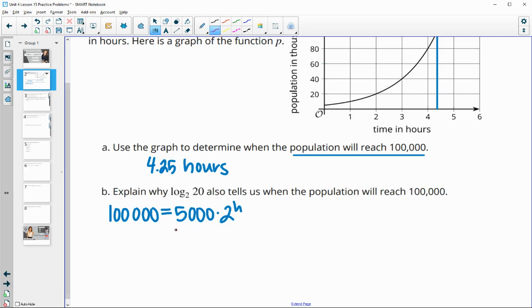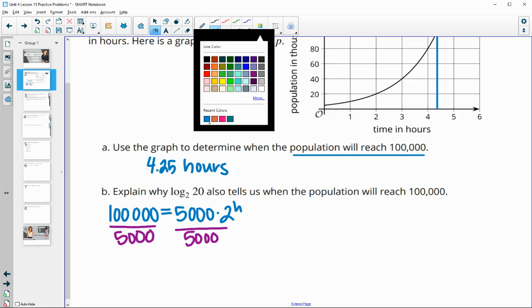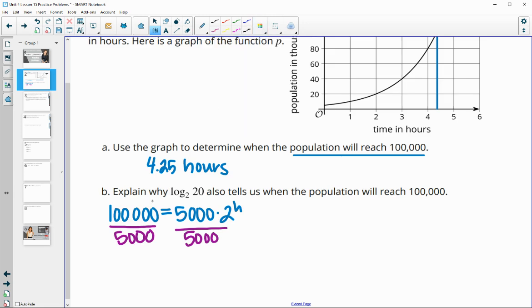So if we were to divide both sides by 5,000 to isolate what this 2 to the H power is going to be, we would get 100,000 divided by 5,000 is 20, and then the 5,000 divided by 5,000 is 1. So we would get 20 equals 2 to the H, and that's the exponential form. And the logarithmic form of that would then be the log base 2 of 20 would equal H. And so that's why this also tells us when that population will reach 100,000.